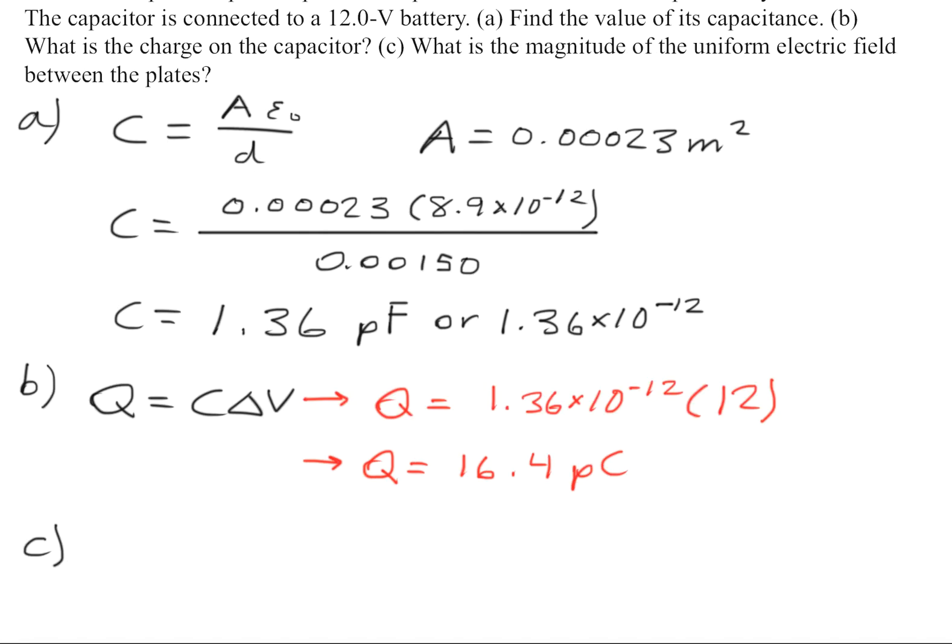To find the magnitude of the uniform electric field, we use this formula right here. We'll go ahead and substitute in the values. This results in an E field of 8,000 volts per meter.